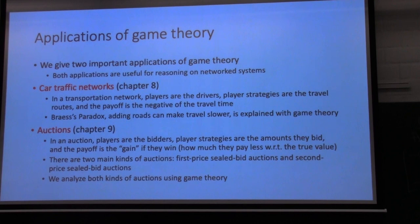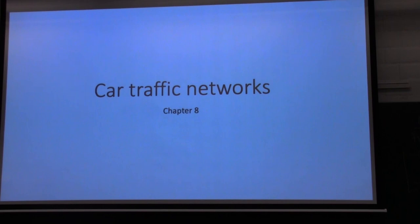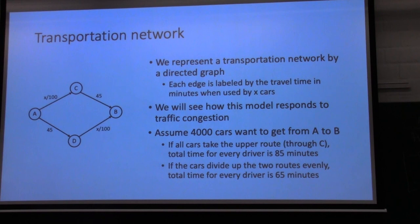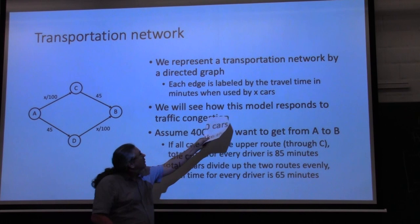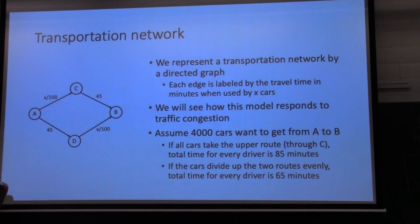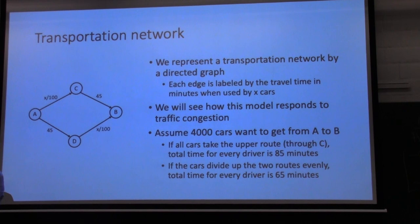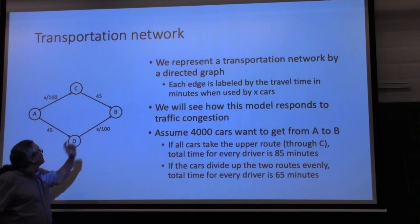So let me start by talking about car traffic networks with a simple example. Here's a transportation network — these are intersections, these are roads, and the numbers are the travel times in minutes. This road always takes 45 minutes. This road takes more time if there are more cars — it's a narrow road, so the more cars, the more minutes. If you have 1,000 cars it will take 10 minutes. Here also 45 minutes, and here also x over 100.